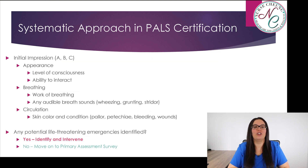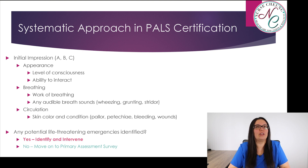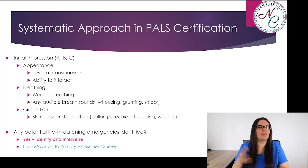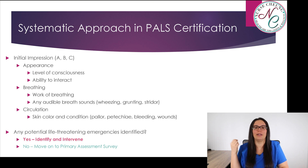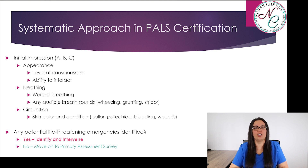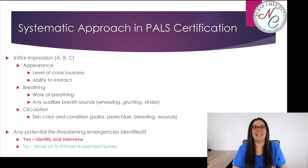To begin with, we're going to look at our initial impression — our ABC. That stands for appearance, breathing, and circulation. For appearance, we're looking at level of consciousness and the ability for the child to interact. For breathing, we're looking at the work of breathing and any audible breath sounds such as wheezing, grunting, or stridor. And in circulation, we want to look at the skin color and condition — so that's pallor, petechiae, bleeding, or wounds.